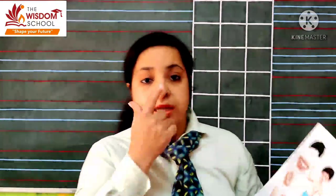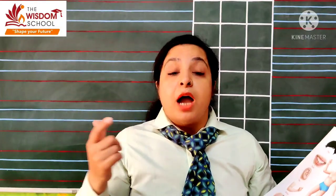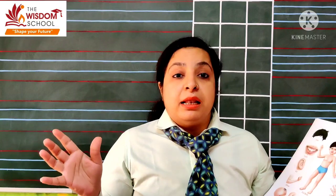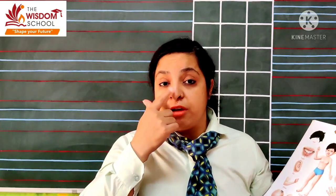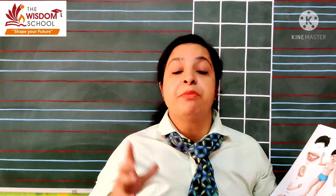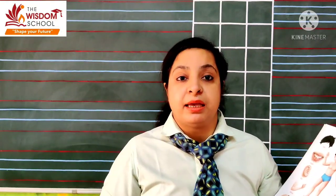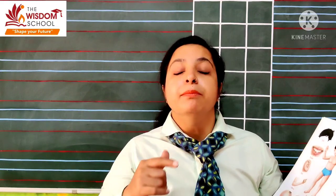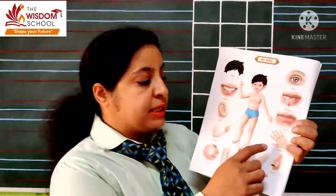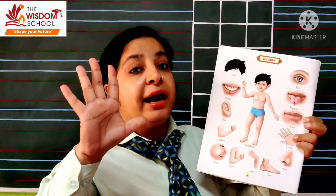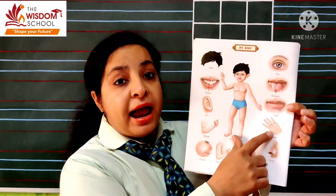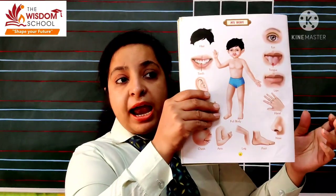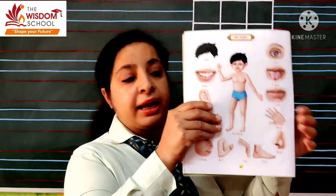Next is — what is our nose? This is our nose. We can smell with our nose. What do we say? Smell. We can smell with our nose. Hum apni nose se smell kar sakte hain, hai na? Kaisi smell aa rahi hai — achi aa rahi hai, gandi aa rahi hai — theek hai? Smell. And this is our hand. Kya hai humara? Hand. Ab yeh hand se maine book ko hold kiya hua hai — pakda hua na, is hand se dekho.